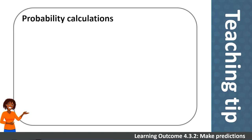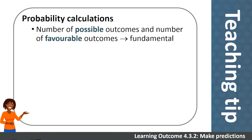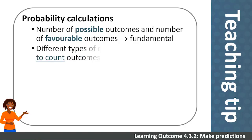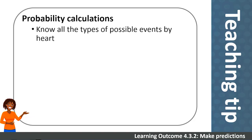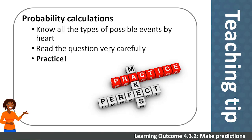Teaching tip: the key to finding solutions in probability is working out how many possible outcomes there are and how many favorable outcomes there are. Guide students to use sketches to help them count all the outcomes correctly. The key to successfully mastering probability calculations is to learn all the possible options and types of events. Teach students to really read the questions carefully to make sure they understand what is being asked, and make sure they practice lots of examples.